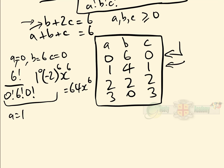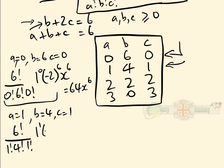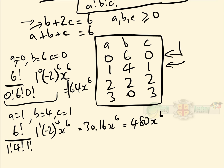For a equals 1, b equals 4, c equals 1: substituting gives 6 factorial over 1 factorial times 4 factorial times 1 factorial, times 1 to the power of 1, times (minus 2) to the power of 4, times x to the 6. That equals 30 times 16 times x to the 6, which is 480x to the 6.